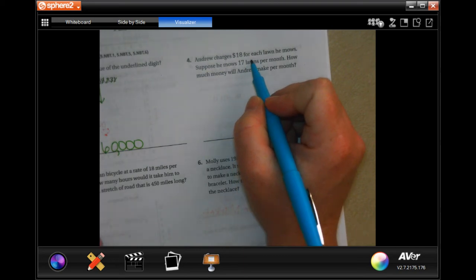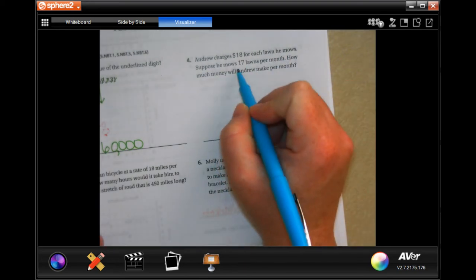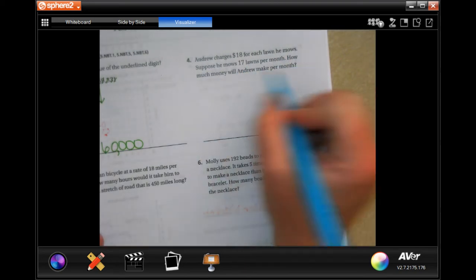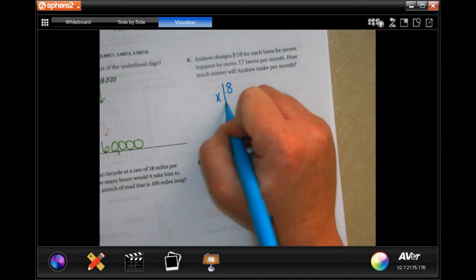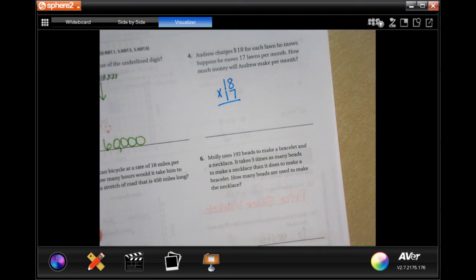Andrew charges $18 for each lawn he mows. Suppose he mows 17 lawns per month. How much money will Andrew make per month? So 18 times 17.